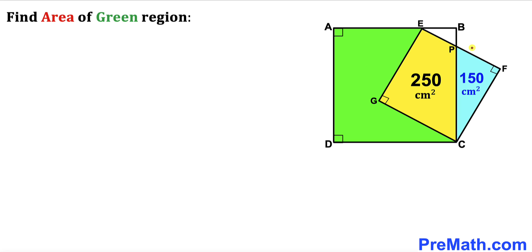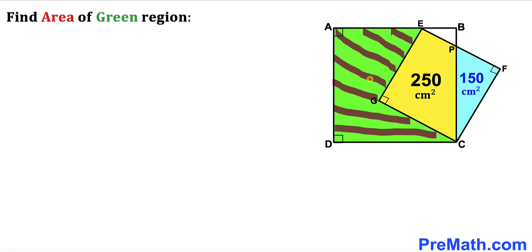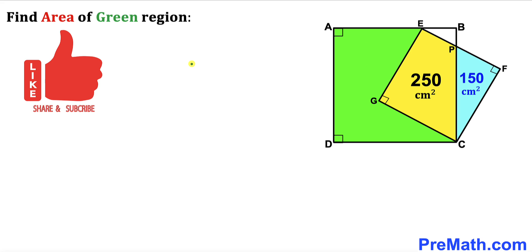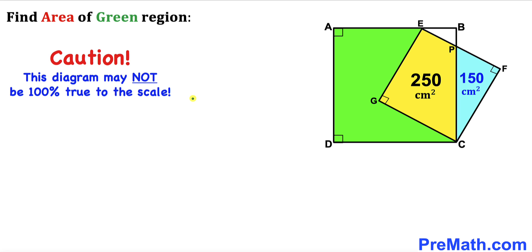These are put together such that the area of square EFCG is divided into two parts. The yellow area is 250 centimeter square whereas the blue area is 150 centimeter square, and our task is to calculate the area of the green shaded region. Please keep in mind that this figure may not be 100% true to scale.